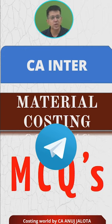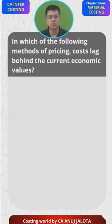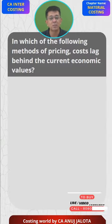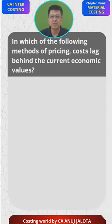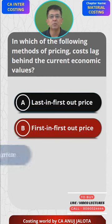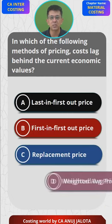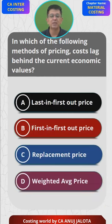So today the question for us is: in which of the following methods of pricing do costs lag behind current economic value? The four options are: A) LIFO, B) FIFO, C) Replacement Cost, and D) Weighted Average Price.